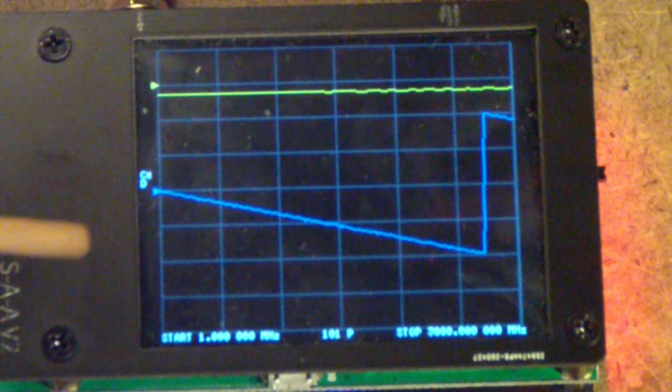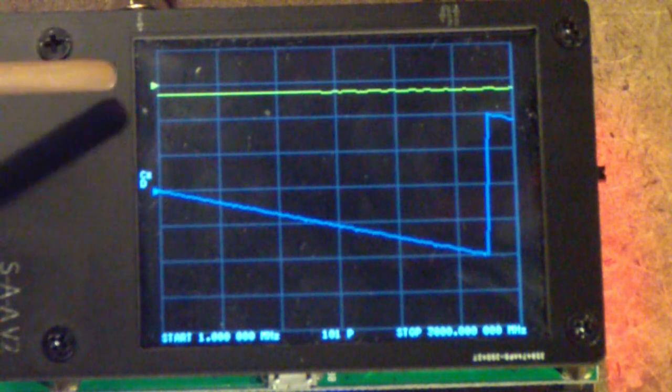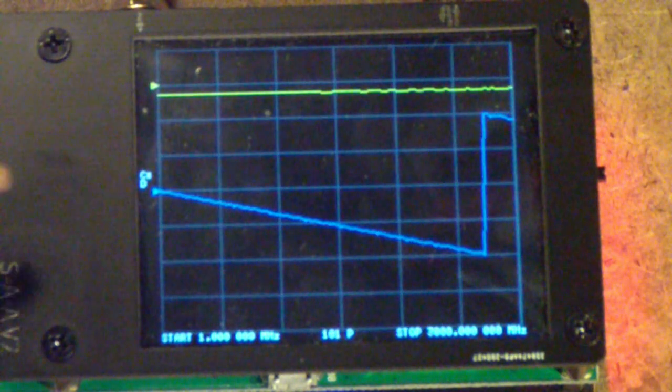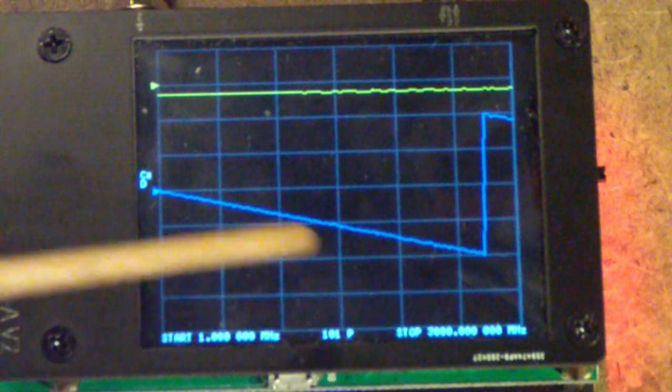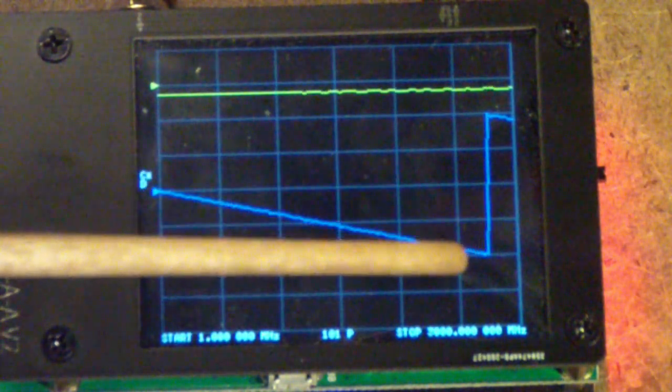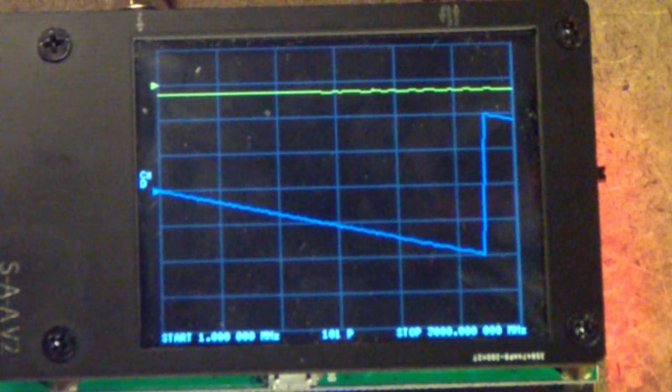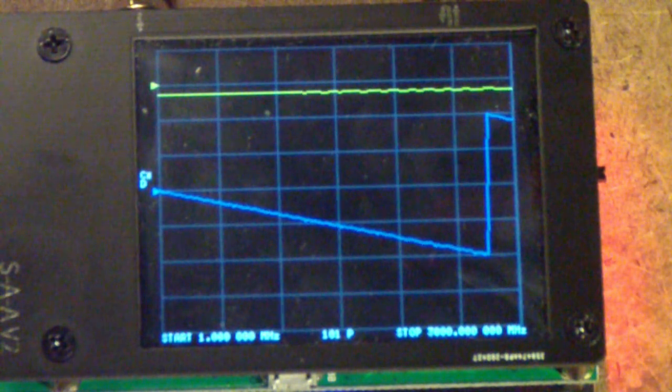So V2 and Tiny show essentially the same 3 dB of loss and 180 degrees of phase shift pretty linearly from a megahertz to about 2.5 to, or I'm sorry, about 2.7 or 2.65 gigahertz at which time the phase shift is 180 degrees.